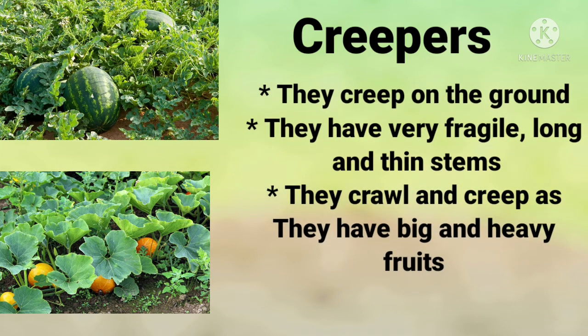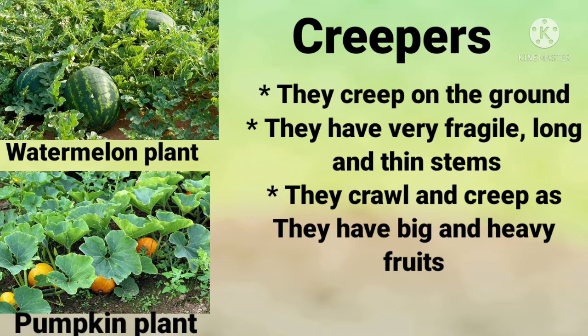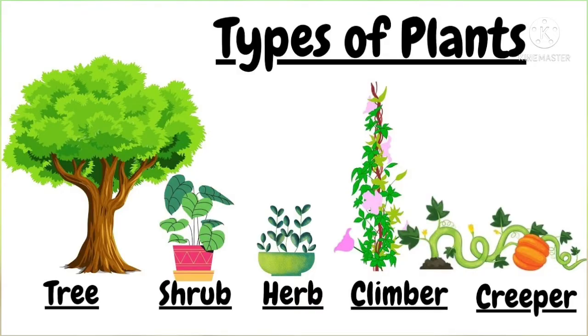Now let's move on to creepers. Creepers are plants that creep on the ground. They have very fragile, long, thin stems that can neither stand upright nor support their own weight. They crawl and creep as they have big and heavy fruits. Some examples of creepers are watermelon plant and pumpkin plant.